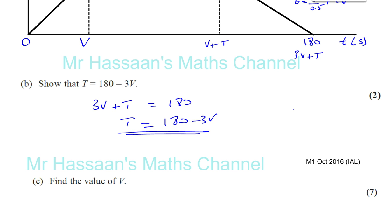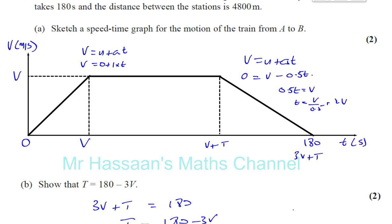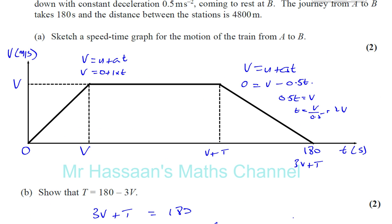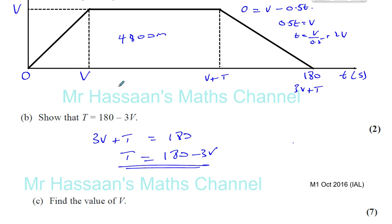And part C tells us to find the value of V. Well, how can we do that? Look at the information given in the question. There's one piece of information that's given that we haven't used so far. And that's that the distance between the stations is 4,800 meters. That means the area under this trapezium is 4,800. The distance traveled is 4,800. So if we think about the area under the trapezium, we have the distance between those parallel sides, which is this V divided by 2.